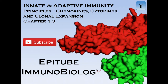Welcome back everybody, this is EpiTube Immunobiology, the Principles of the Innate and Adaptive Immunity. This is chapter 1.3 on chemokines, cytokines, and clonal expansion. Please make sure to hit the subscribe button as we follow along because this is the third lecture of a series of lectures that will continue to cover these things in greater detail. Let's begin.